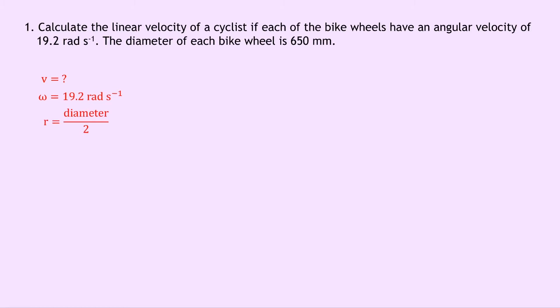We have that the radius is equal to the diameter divided by 2, so that gives us 650 times 10 to the minus 3 divided by 2, converting our millimeters into meters, which then gives us 325 times 10 to the minus 3 meters. We can then write down our equation relating linear and angular velocity, and that's V equals r omega. So substituting in our numbers, we have that this equals 325 times 10 to the minus 3 times 19.2, which when we put that into your calculator gives 6.24 meters per second.